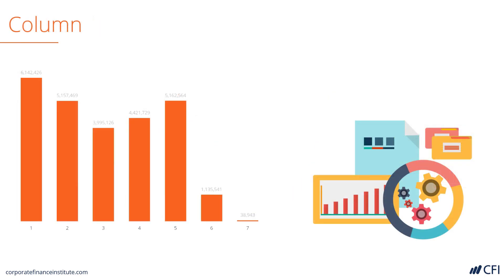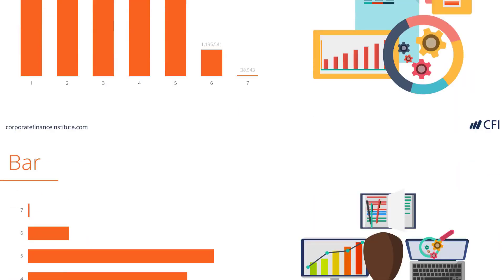Here we've got a simple example of a column chart. As you can see, it's got a series of seven data points plotted with a very clean looking chart. This is best for time series information. Imagine that the numbers one through seven are months or years, and we can easily read from left to right and see what the trend is with this company.